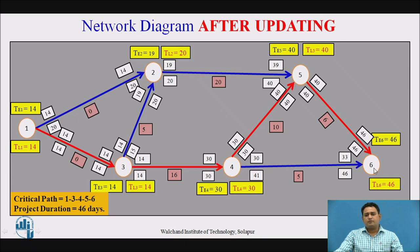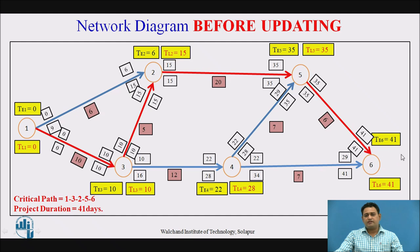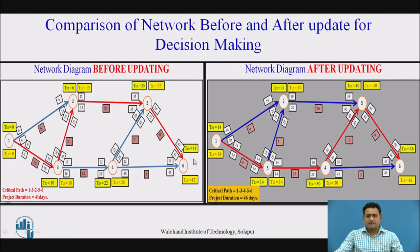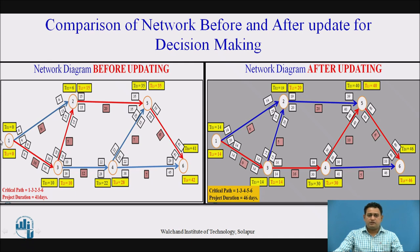After updating, the project duration is 46 days, which was initially 41 days before updating. Comparing the network diagrams, the critical path before updating was 1-3-2-5-6, and after updating it has changed to 1-3-4-5-6. The project duration increased from 41 to 46 days. Additionally, the initial event 1 had a starting time of 0 before updating, but after updating it is 14. These are the major differences between the network diagram before and after updating.